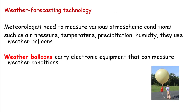As you see here, students, first precipitation — we have to remember that. That means snow, rain, sleet — anything that comes from cloud to earth, we call it precipitation. Humidity: the water molecules in the air, we call humidity. The weather balloon carries electronic equipment that can measure weather conditions.